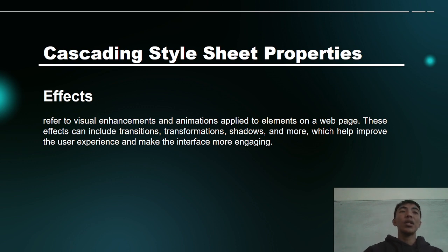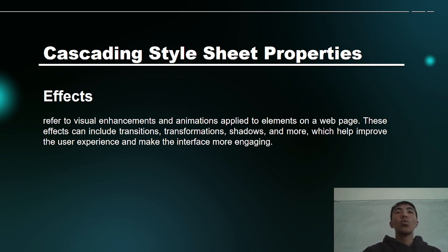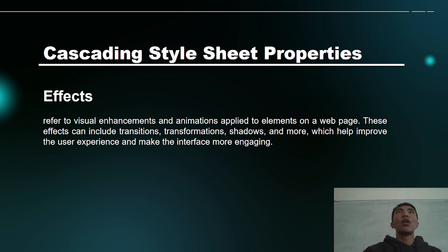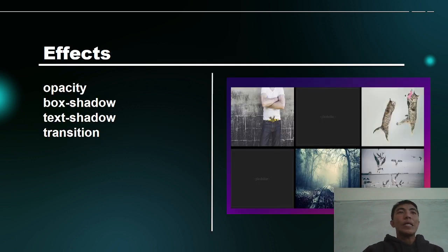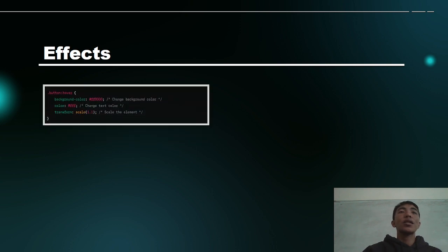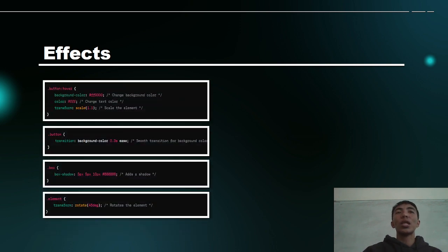Next is effects, which refer to visual enhancements and animations applied to elements on a web page. Effects help make our output effective and efficient for viewers and audience of our website, making it more entertaining to get their attention. The effects under CSS that we can add are opacity, box-shadow, text-shadows, and transitions.